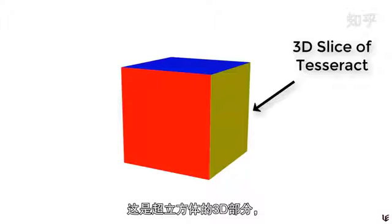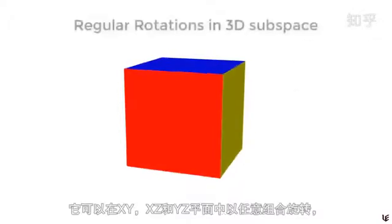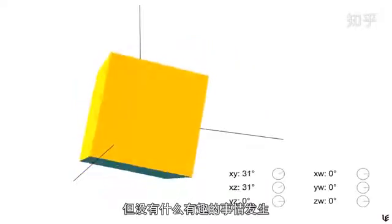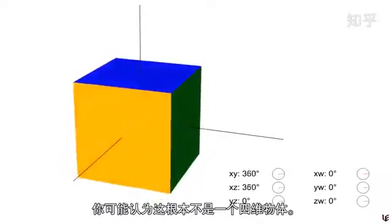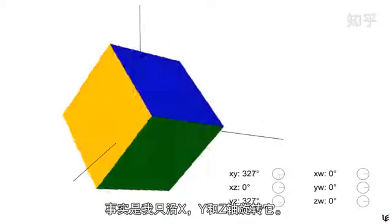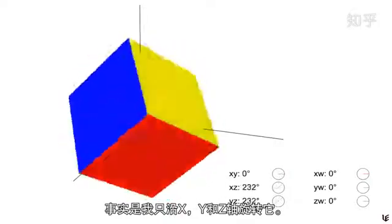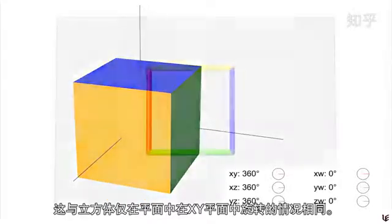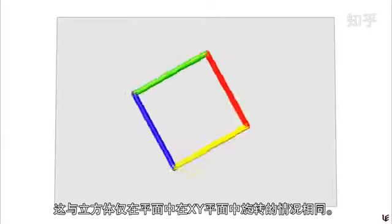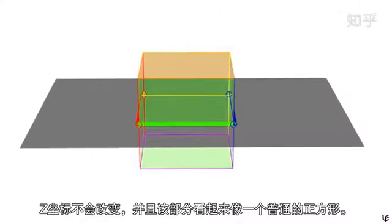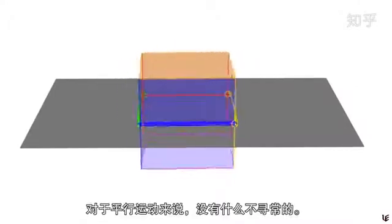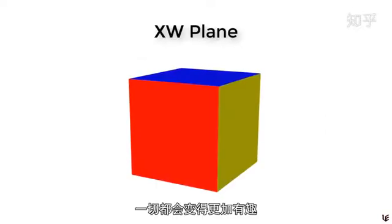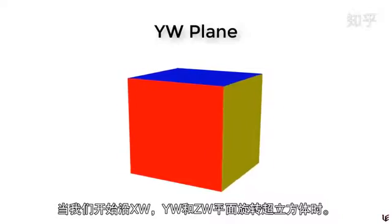This is a three-dimensional slice of our tesseract halfway intersecting our reality. We can rotate it in any combination of the xy, xz, and yz planes as we can any other 3D object, and nothing interesting happens — you might think I'm lying and this isn't really a 4D object. The reason it looks so normal is because rotating only in xyz space means the w coordinates of every point don't change. In four dimensions there are not three planes of rotation but six planes, and the visuals get interesting when we start rotating in the xw, yw, and zw planes.